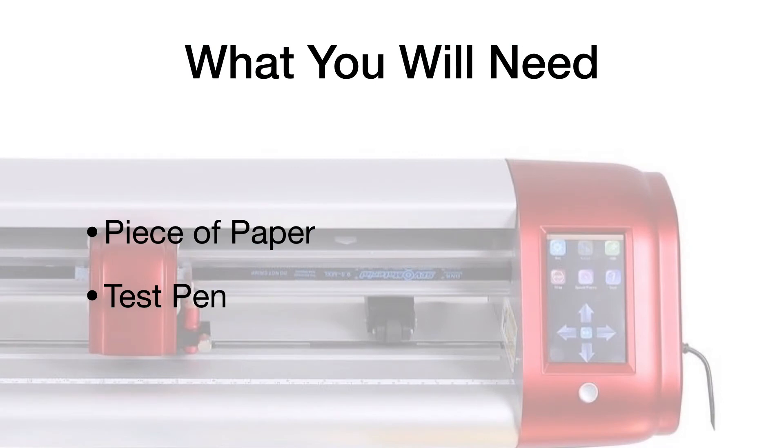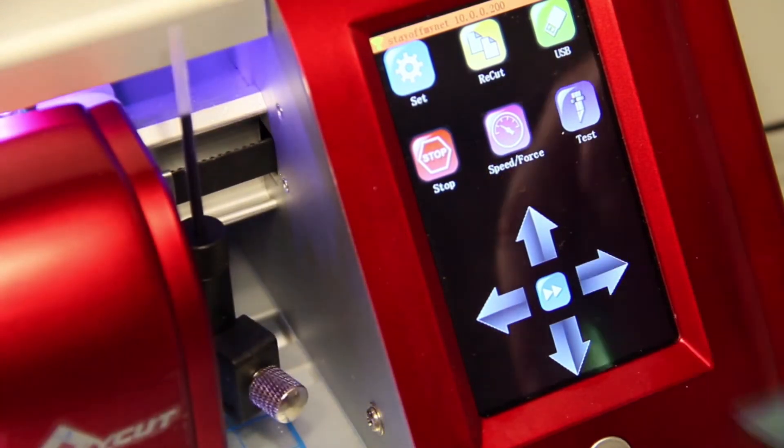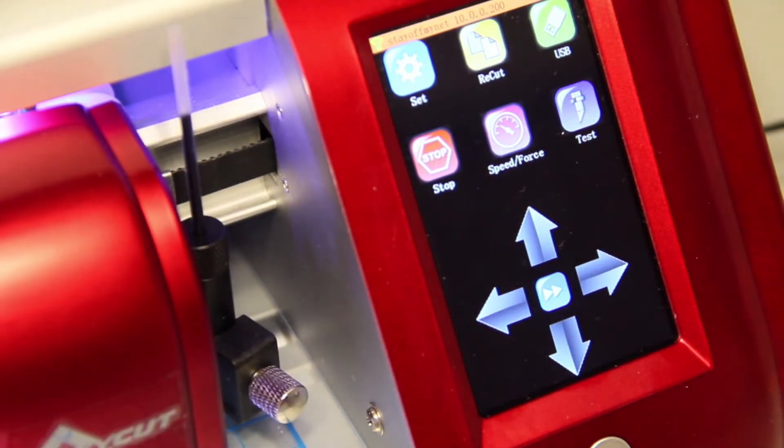First, we need a piece of paper on there, a little test paper, whatever scrap you have. And then we're also going to need the test pen, right? So you need the test pen inserted. You can see that we have it right here. That's the one that came with the SkyCut machine.